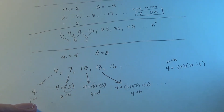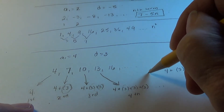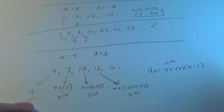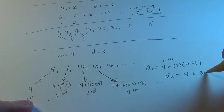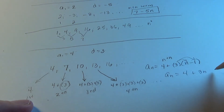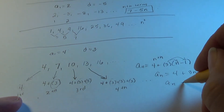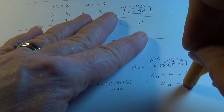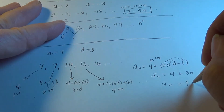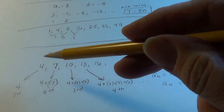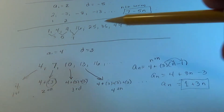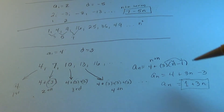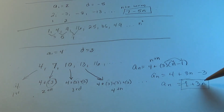When we multiply that out, a sub n equals 4 plus 3 times (n minus 1). Distributing gives a sub n equals 4 plus 3n minus 3, which simplifies to a sub n equals 1 plus 3n. Let's verify: when n equals 1, we get 1 plus 3, which is 4. When n equals 2, we get 1 plus 6, which is 7. It's working.